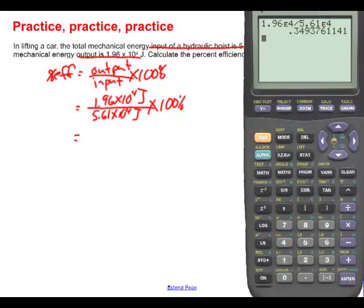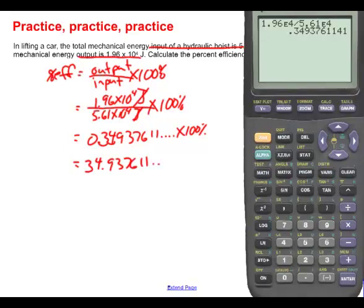Okay, so, calculator time. We're going to take 1.96 second function EE 4th power. And we're going to divide that by 5.61 second function EE 4th power. And what do we get? We get 0.349376 and that's going to be times by 100%. Now, notice that the joules cancel out here. Okay, well, you know, times by 100%. That's so easy. All you've got to do is move the decimal point two places. I wouldn't even bother multiplying by 100. Move it two places. You get 34.937611 percent.